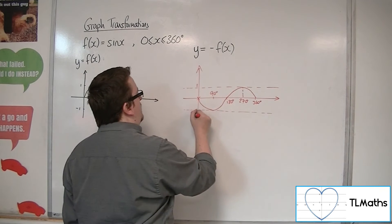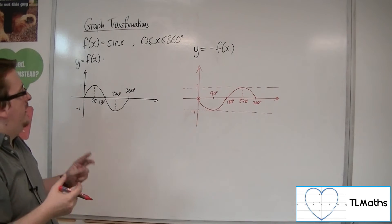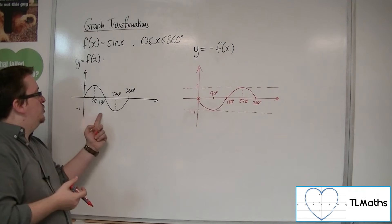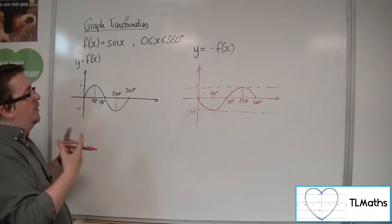Still going between minus 1 and 1, but the curve has changed from this one. What has happened?